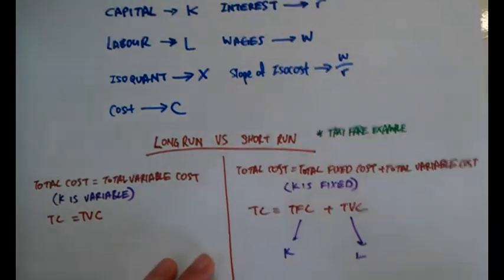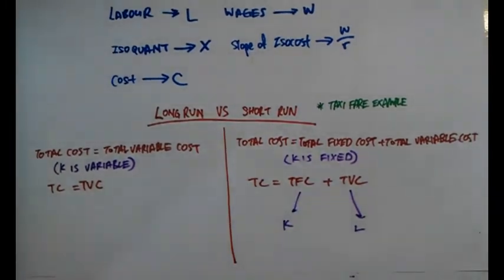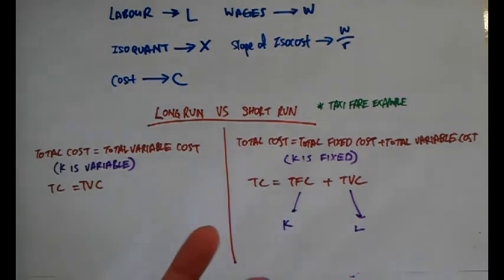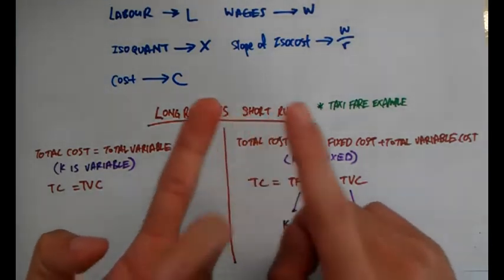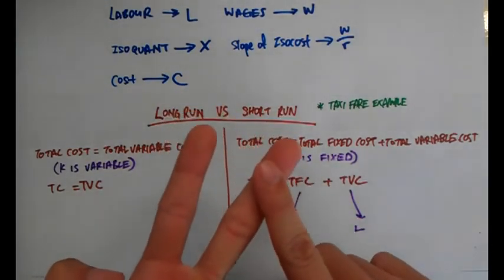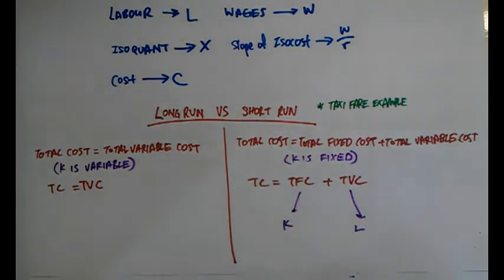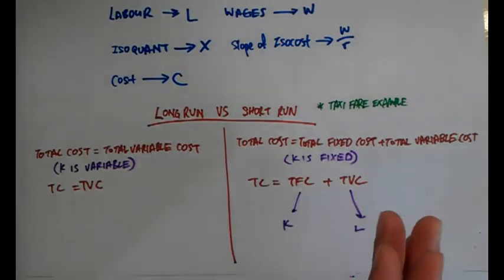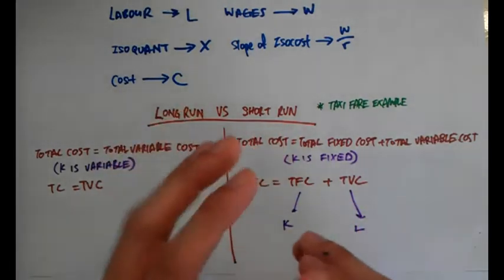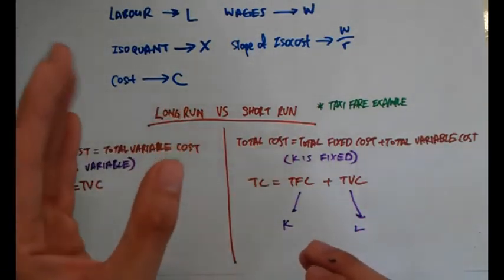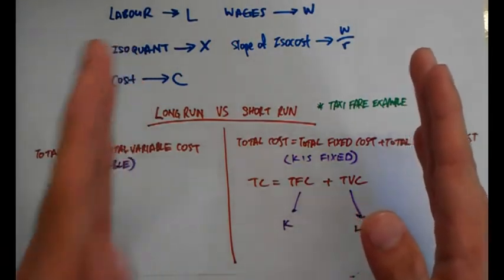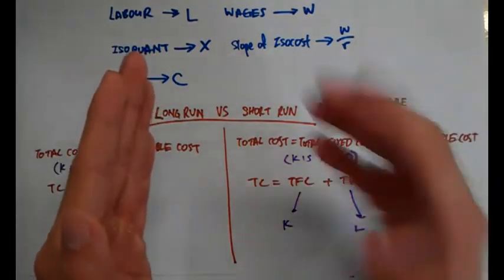Now let's talk about the long run versus the short run. There are different kinds of costs: fixed cost and variable cost. In the long run, all costs are variable, so total cost is entirely variable. In the short run, there are two entities: fixed cost and variable cost. The fixed cost remains fixed and the variable cost will change.